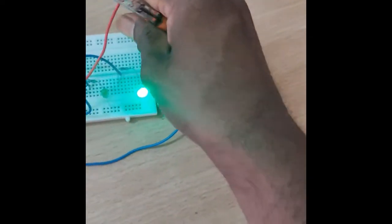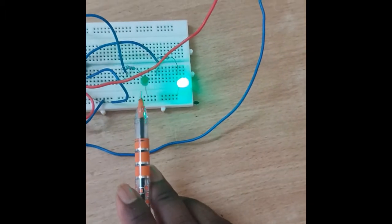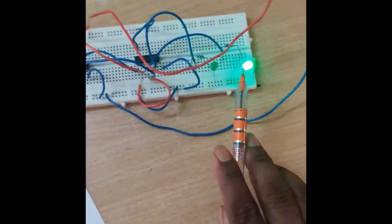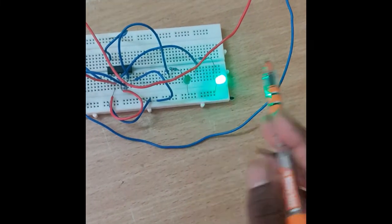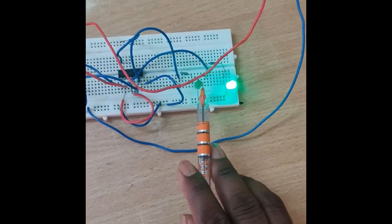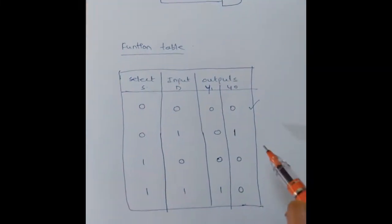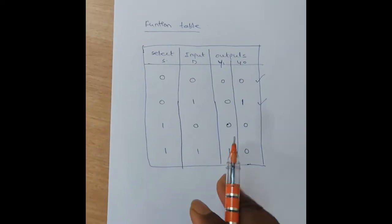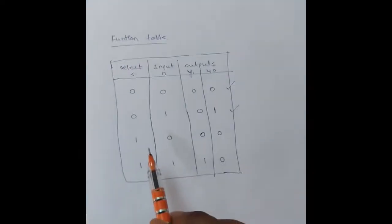For the next combination S=0, D=1, the outputs are zero and one. That means Y0 is in the one condition and Y1 is in the zero condition. This second combination is also verified.